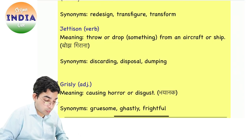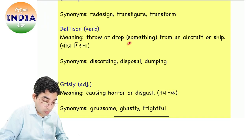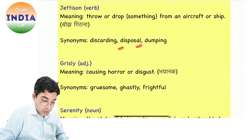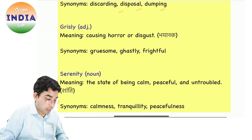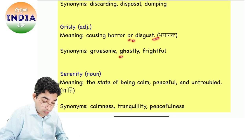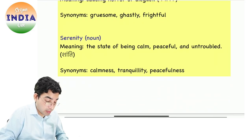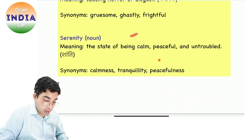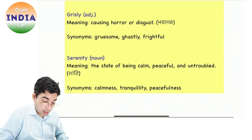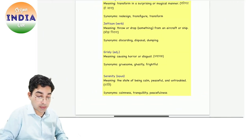Jettison ka matlab hota hai bojh giraana — thrown or drop from an aircraft or ship — discarding, disposal, dumping. Grizzly — grizzly bear hota hai — causing horror or disgust — gruesome, ghastly, frightful. Serenity ka matlab hota hai shanti — the state of being calm, peaceful and untroubled — calmness, tranquility, peacefulness.